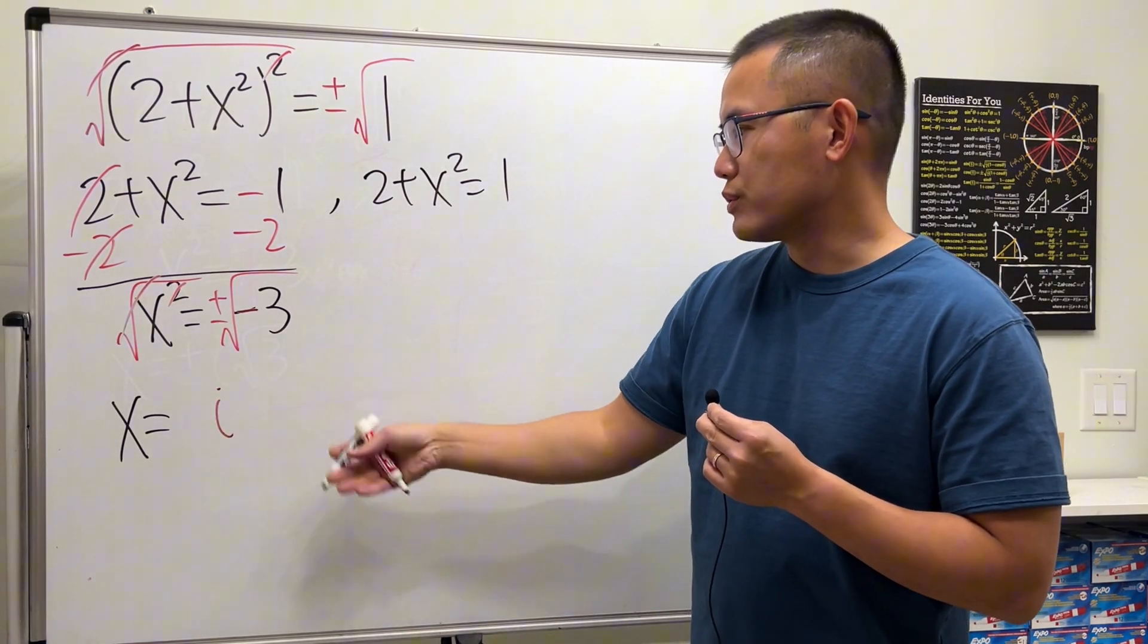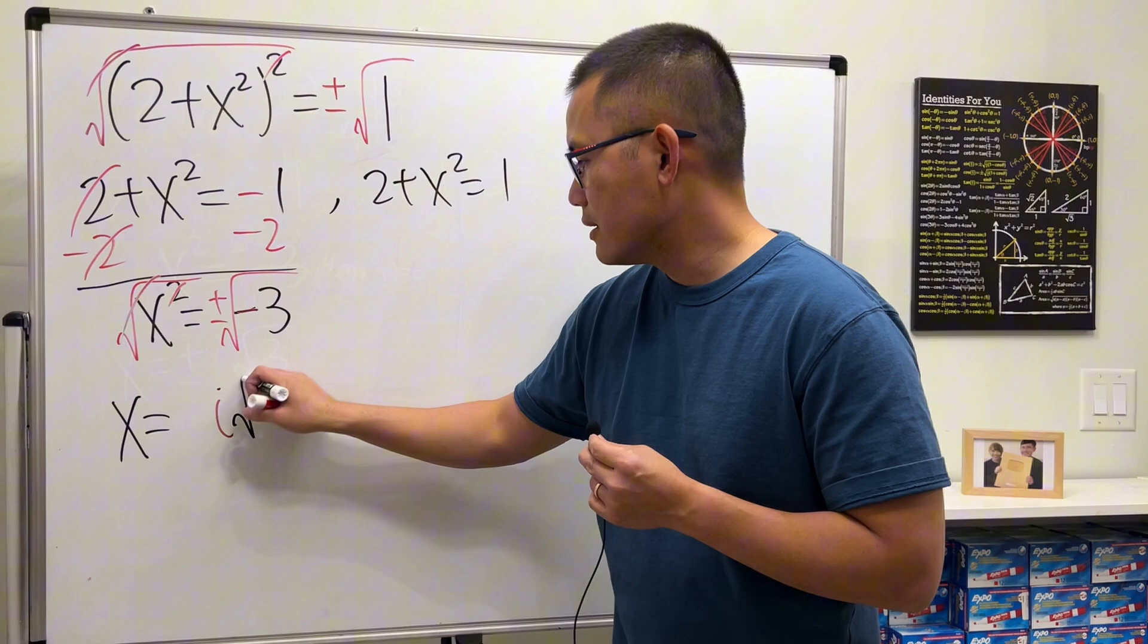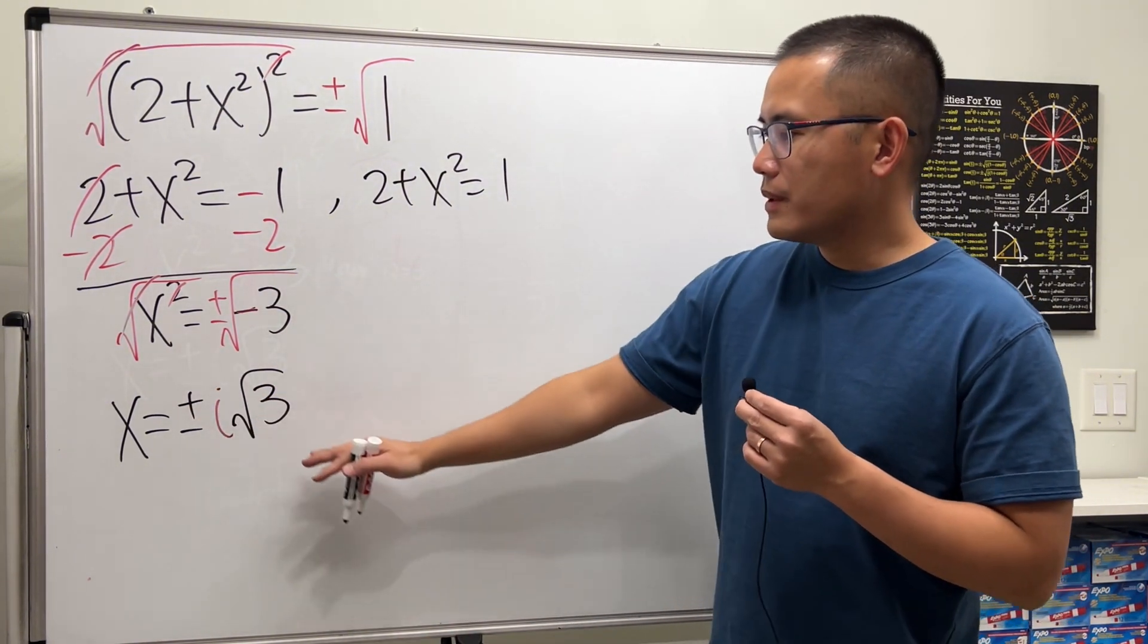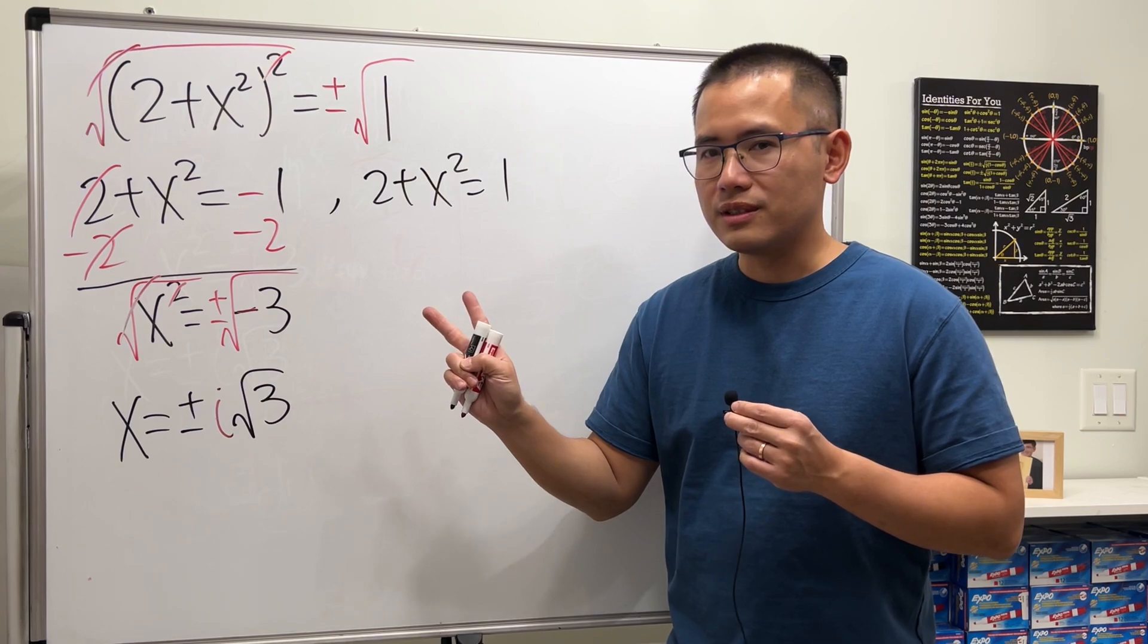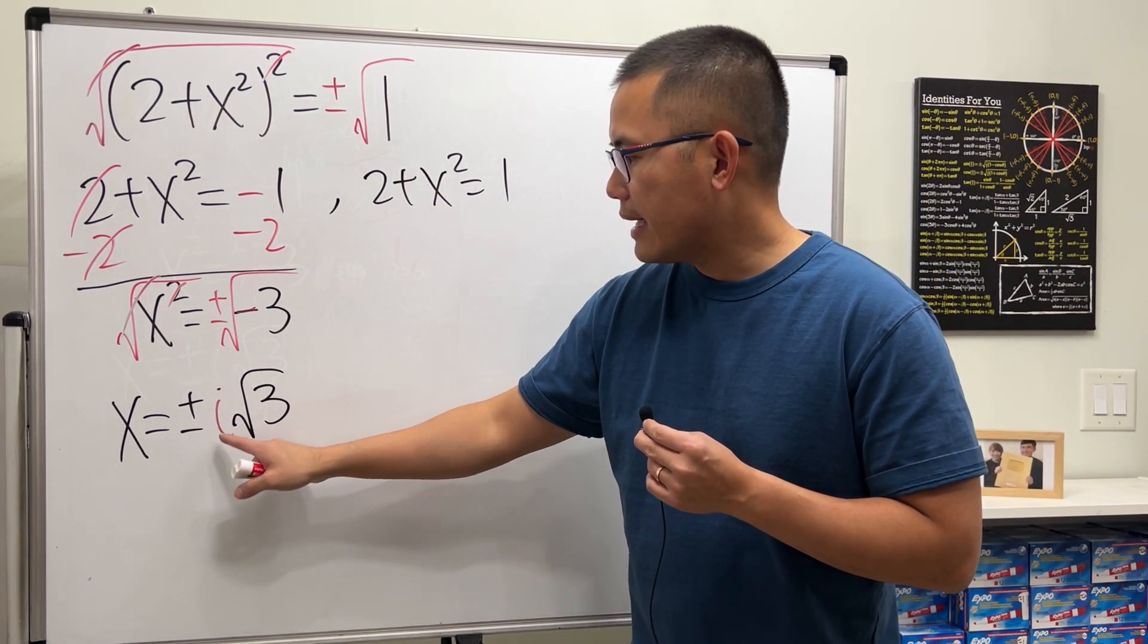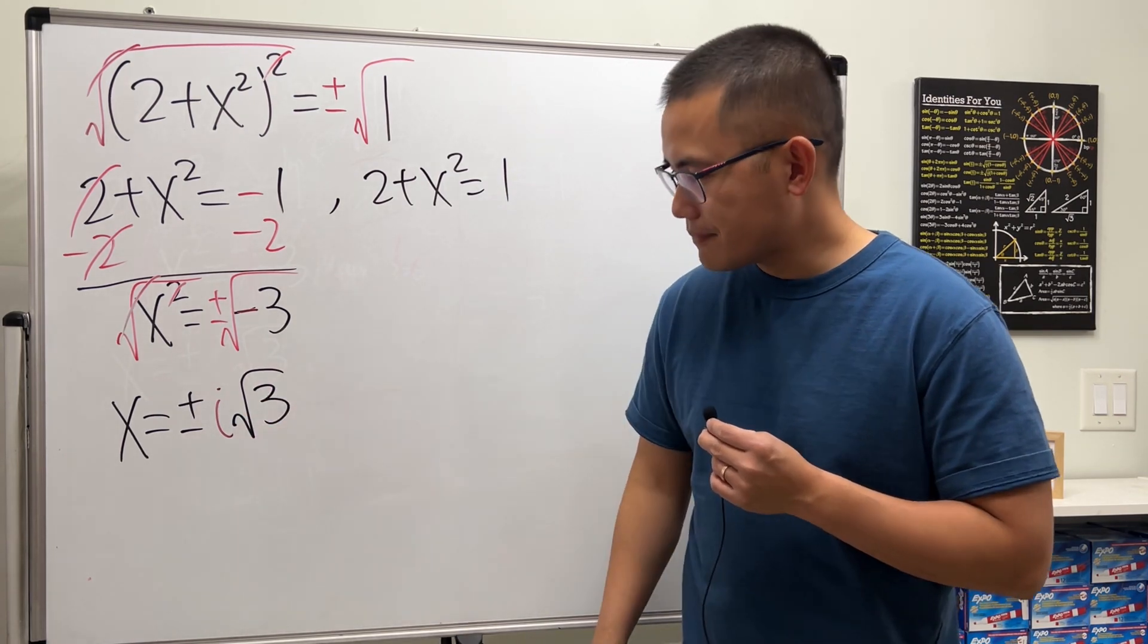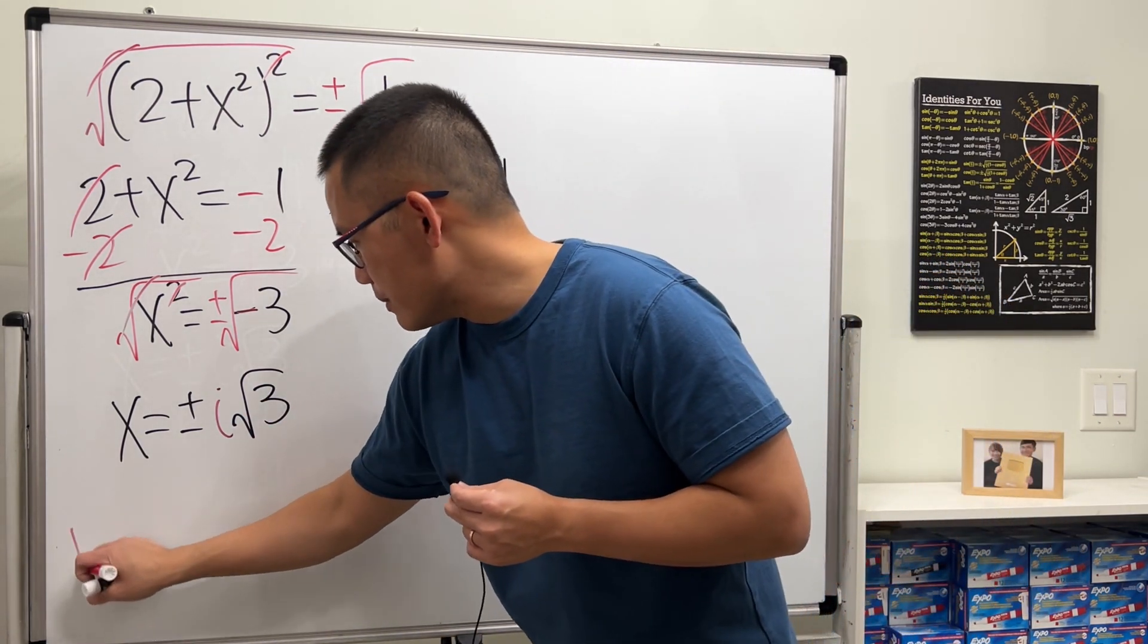And then square root of 3 is just square root of 3—it's not a nice number, so leave it. And then we still have plus or minus, so we actually have two solutions: the first one, +i√3; second one, -i√3. And then I'll just make a little note.